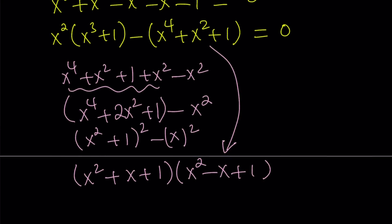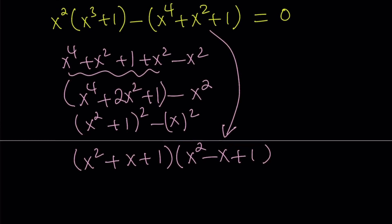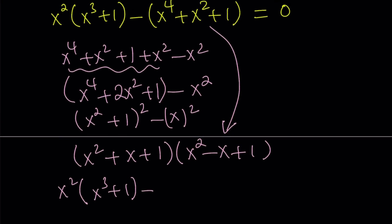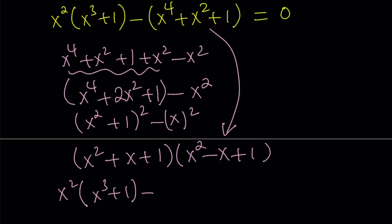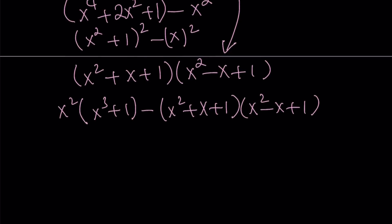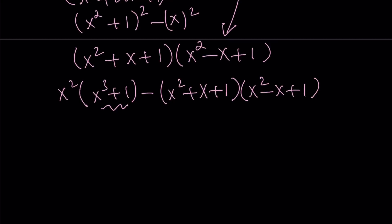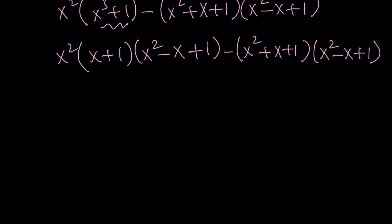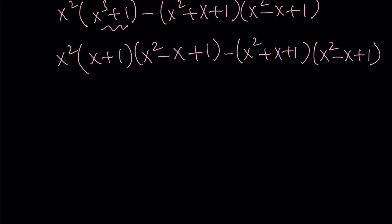Let's substitute these two quadratics into our expression. I'll replace x to the fourth plus x squared plus one with its factored form, then factor x cubed plus one. That's a cubed plus b cubed, so it factors as a plus b times a squared minus ab plus b squared. Notice that we have a common factor — x squared minus x plus one — and that was the whole motivation behind adding the x squared.